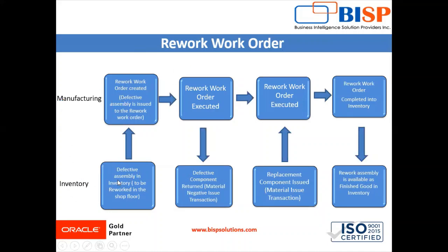In the inventory we have the defective assembly, and we are going to issue this defective assembly to the manufacturing unit. After defining the rework order in the manufacturing unit, we execute the rework work order. First we return the defective component, then in the next step we replace the component issued. At the end, the rework order is completed into the inventory and the rework assembly is available as a finished good. This is the process flow diagram for the rework work order, showing how a defective assembly in the inventory can be reworked on the manufacturing floor.